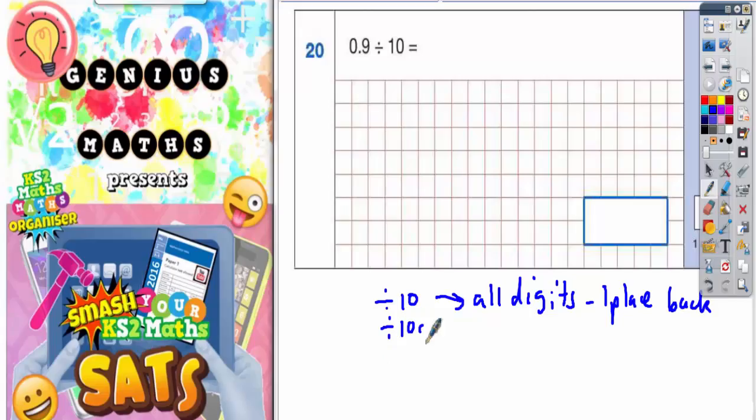If we were dividing by 100, it would be move all the digits two places back. Dividing by 1000 would move all the digits three places back.